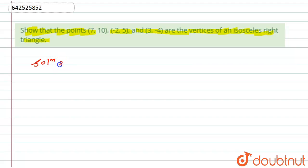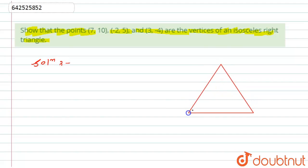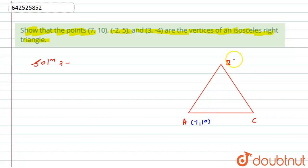First of all, here we have to consider a triangle. Let this be the triangle whose vertices are given to us. Let this be A, this be B, and this be C. The vertices of this triangle are given as A = (7, 10), B = (-2, 5), and C = (3, -1).